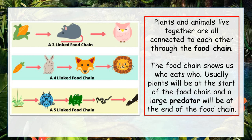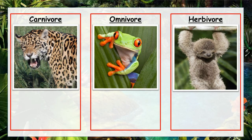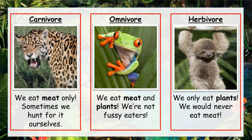Usually the plants will be at the start of the food chain and a large predator will be at the end. The professor also told me that these three words are important — do you have any idea what the difference between a carnivore, an omnivore, and a herbivore is? A carnivore only eats meat — in the rainforest, you'll find them eating other animals. An omnivore can eat meat or plants; they're not very fussy — things like the tree frog eat insects, which are other living creatures. And herbivores only eat plants — they're kind of like the vegetarians of the rainforest; they'd never eat meat.